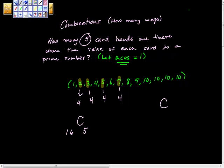Remember that the combination of n events, taking r at a time, is equal to n factorial over n minus r factorial times r factorial.